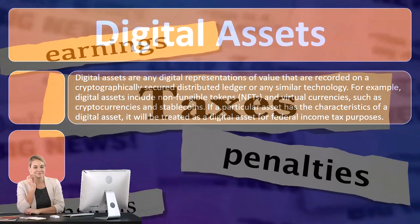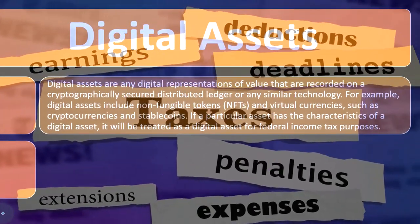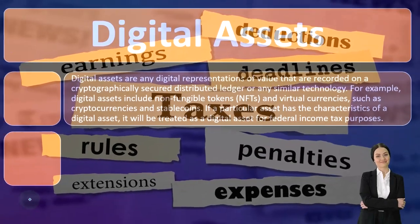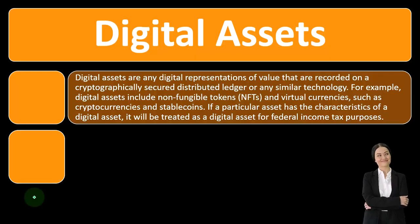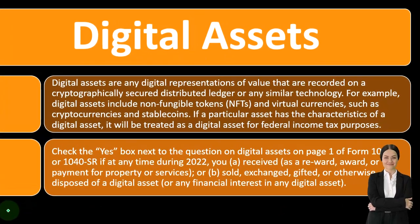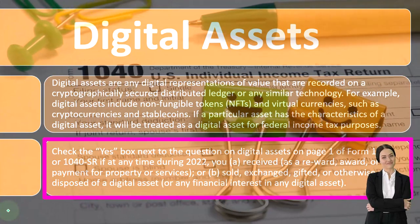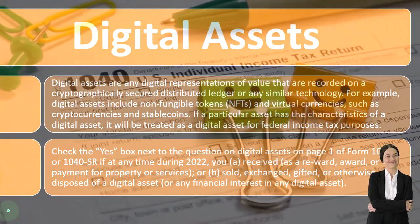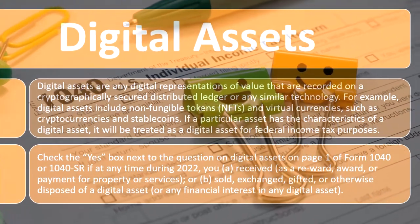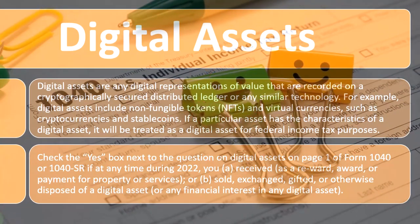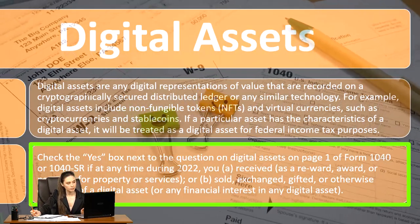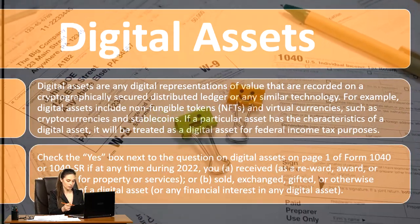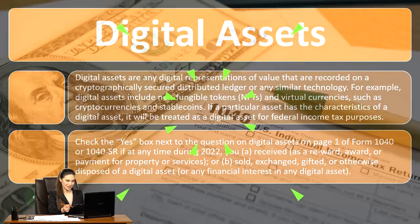Some of these transactions aren't really unlike other transactions when you buy and sell stocks and bonds — you have to value those in dollars too, so you can record gains and losses on the sale of stocks and bonds. Check the yes box next to the digital assets question on page one of Form 1040 or 1040-SR if, at any time during 2022, you received as a reward, award, or payment for property or services, or sold, exchanged, gifted, or otherwise disposed of a digital asset or any financial interest in any digital asset.